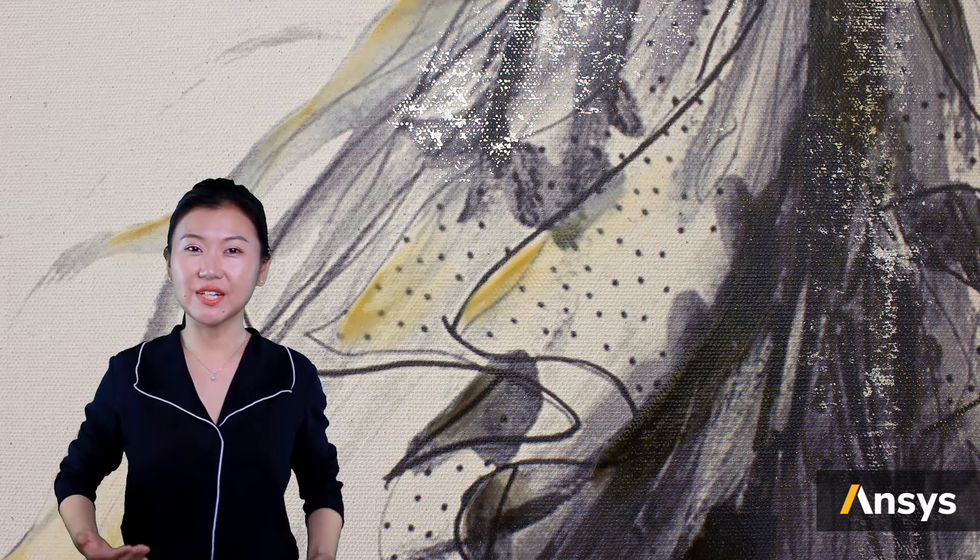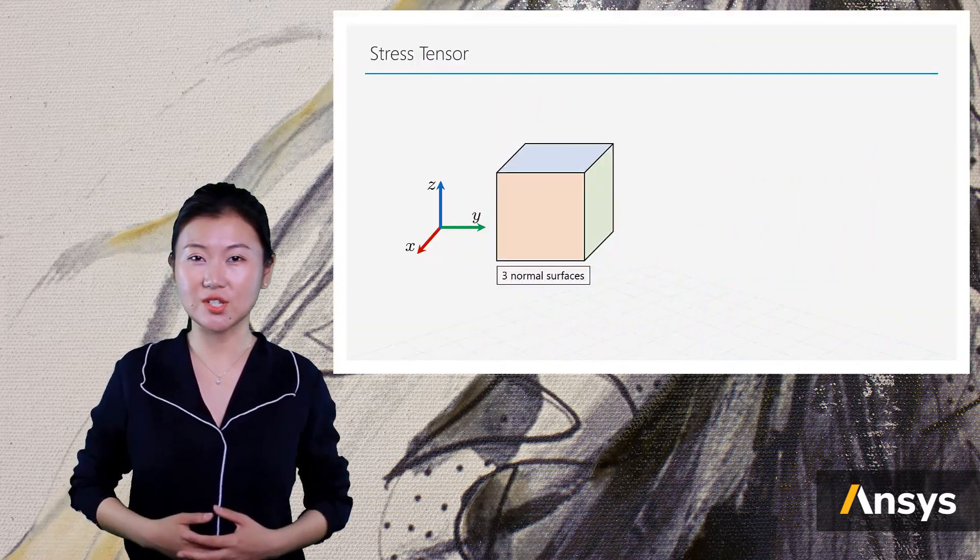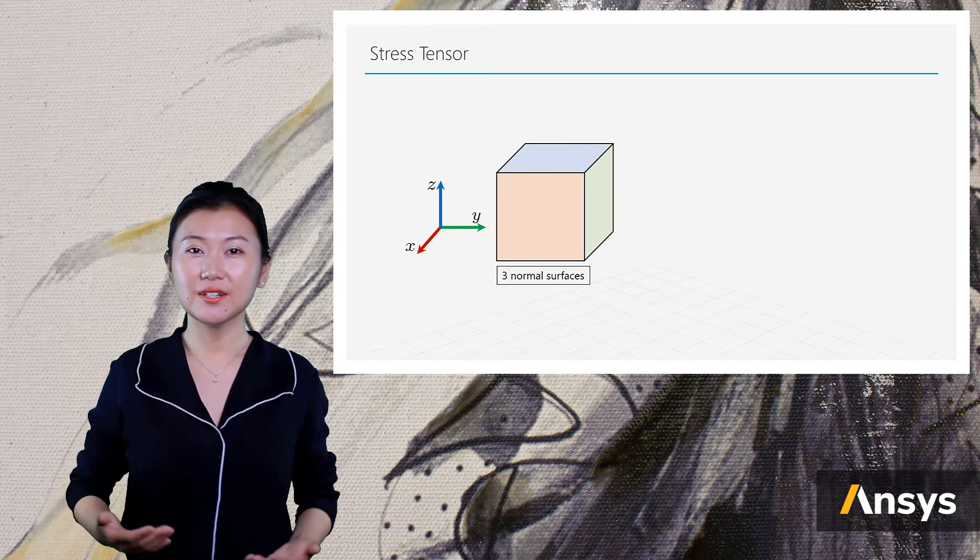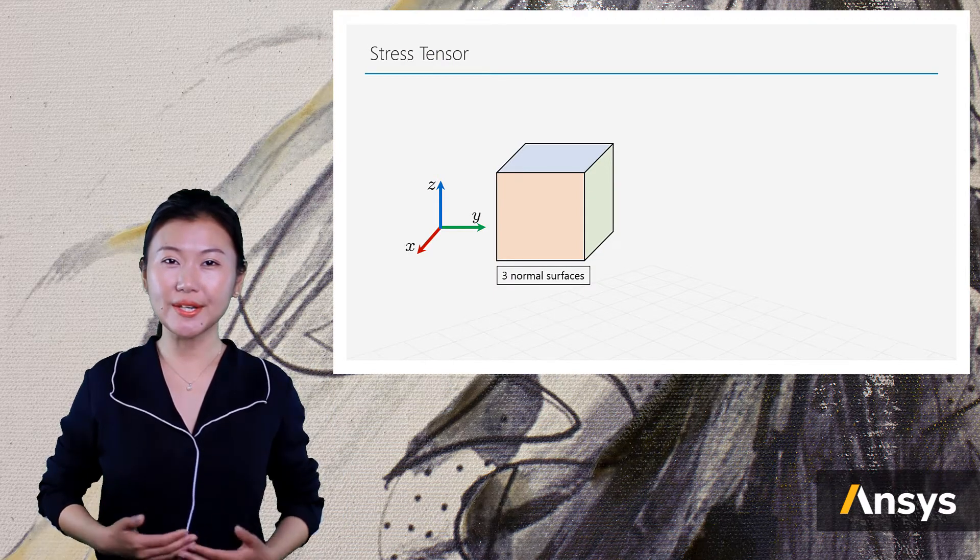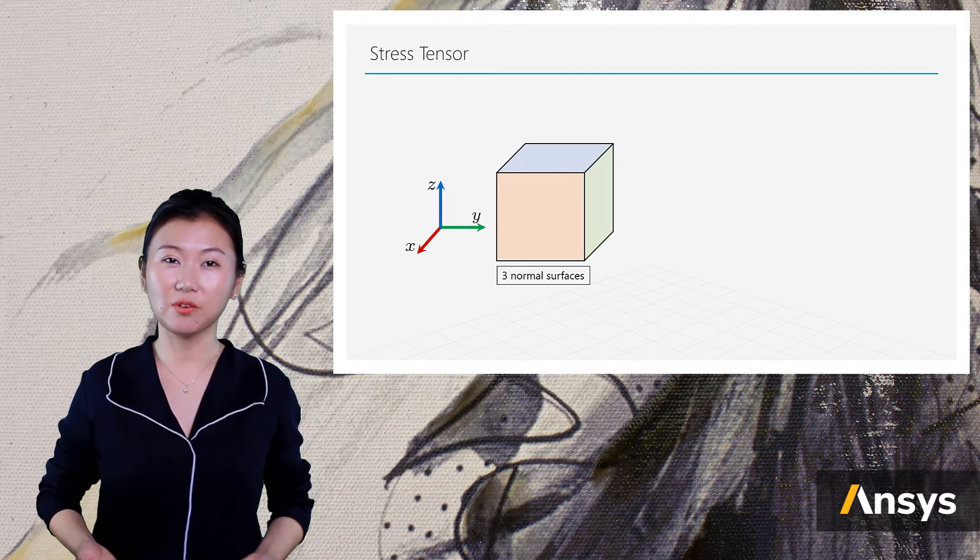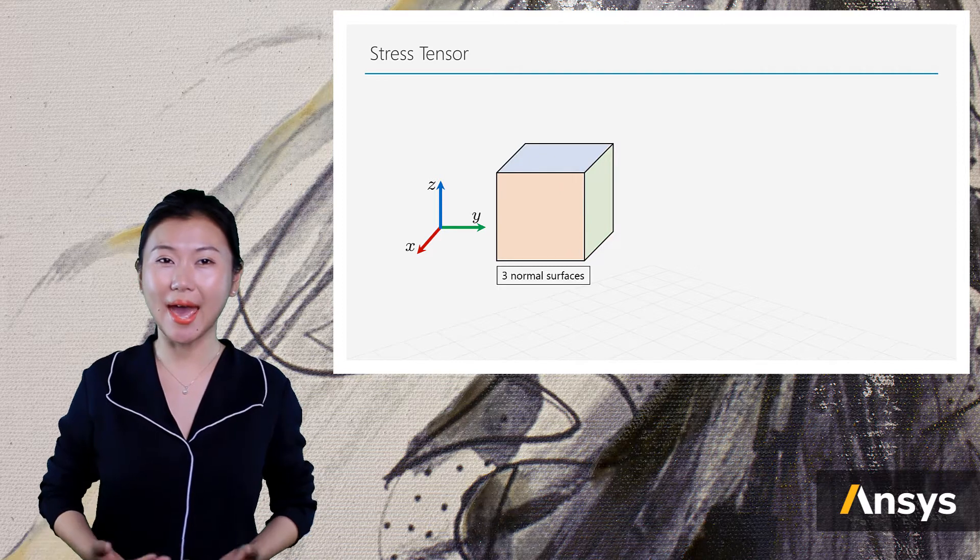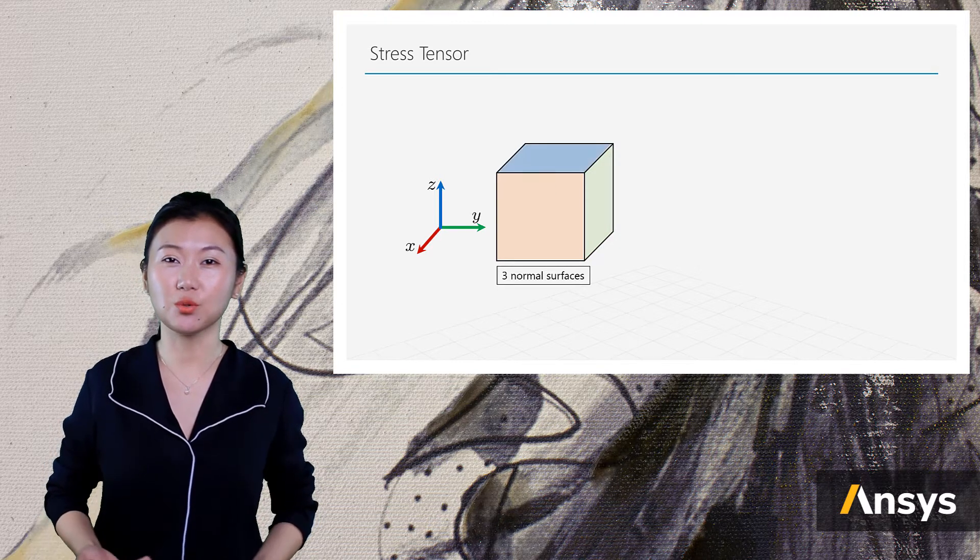With the concept of the infinitesimal cube in mind, let's have a look at the nine components of a stress state. Here, the three normal faces to the coordinate system are marked by different colors. The red one is a normal face to the x-axis, green one is the normal face to the y-axis, and blue one is the normal face to the z-axis.